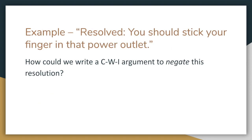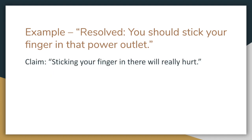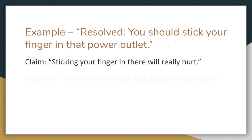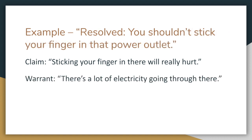Let's look at an example of a Claim-Warrant-Impact argument. Here's a resolution: 'Resolved: You should stick your finger in that power outlet.' Don't do that — because we're actually going to negate this resolution. Let's think of an argument for why you should not stick your finger in that power outlet. Here's a claim: sticking your finger in there will really hurt. Warrant: how do I know it's going to really hurt? Well, there's a lot of electricity going through there. That's an okay warrant — we can do better though. According to World Standards 2017, power outlets in the United States typically output 120 volts at a rate of 60 cycles per second. That is enough to do serious damage to a person. Now I have a source and I have a specific amount of electricity.